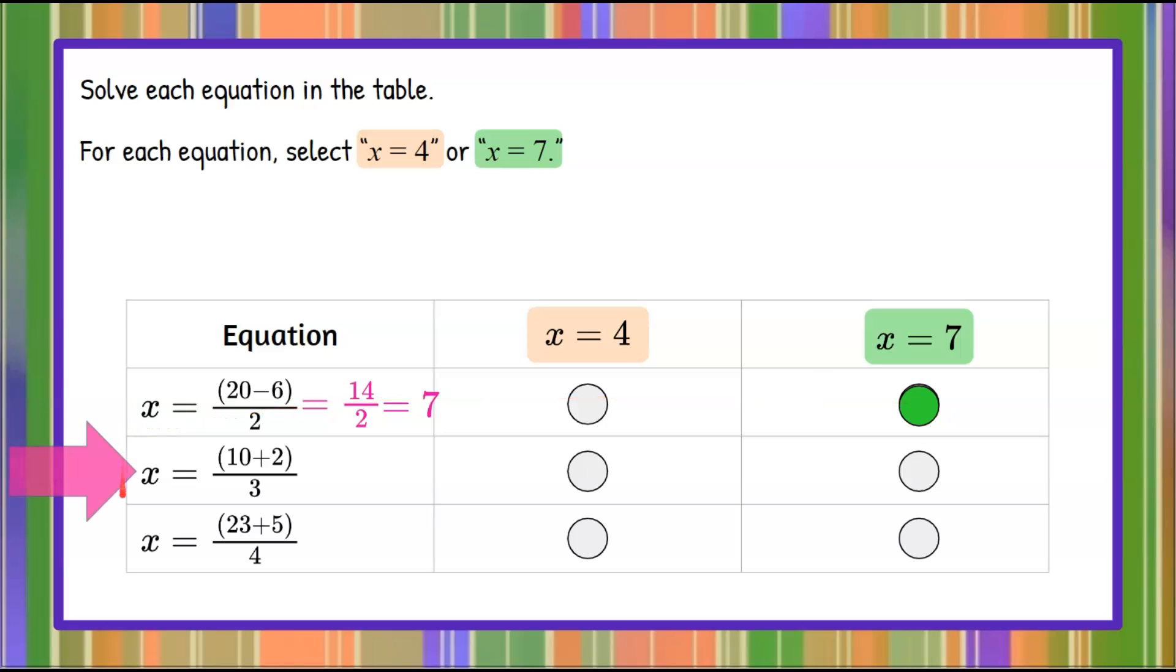Let's move on to the second equation. This one has a sum of 10 plus 2 in the numerator, so we're going to simplify that first. 10 plus 2 is 12, divide by 3. 12 thirds is 12 divided by 3, which is 4. So we're going to make our answer selection here that this equation is x equals 4.